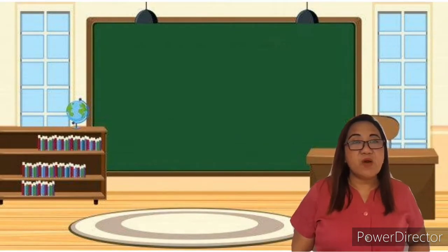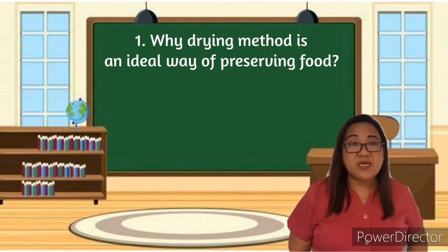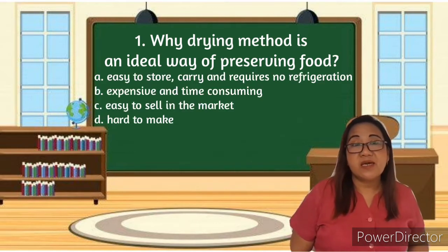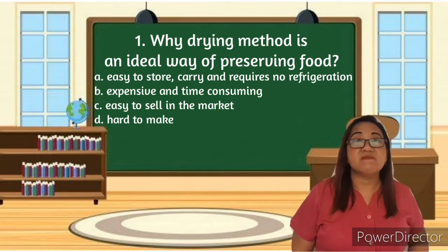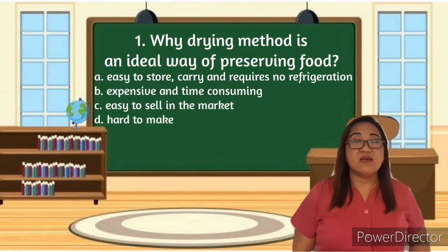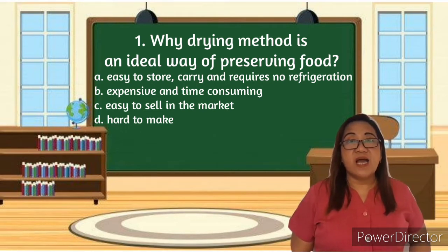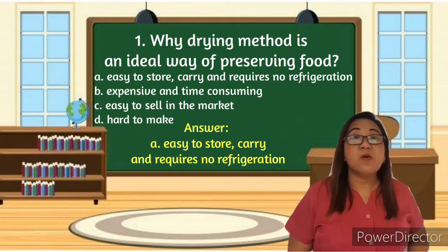Number one: Why is the drying method an ideal way of preserving food? A) Easy to store, carry, and requires no refrigeration. B) Expensive and time consuming. C) Easy to sell in the market. D) Hard to make. Okay, Axel, you may answer. Very good! Your answer is letter A — easy to store, carry, and requires no refrigeration.